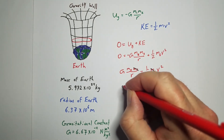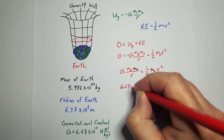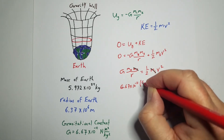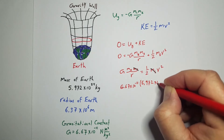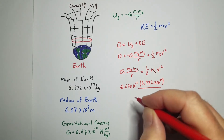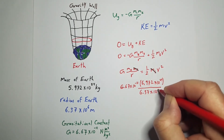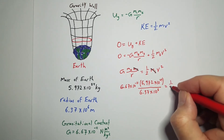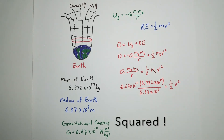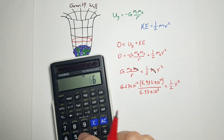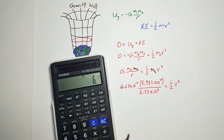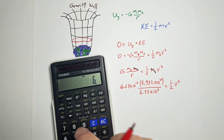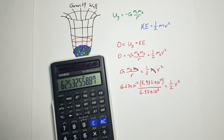Now let's go ahead and start putting in some numbers. G is 6.67 times 10 to the minus 11. The mass of the Earth is 5.972 times 10 to the 24th, divided by the radius of the Earth which is 6.37 times 10 to the 6th. That is going to equal one-half the velocity squared we need to escape Earth's gravity. Let's go to my trusty calculator: 6.67 times 10 to the negative 11, times 5.972 times 10 to the 24th, divided by 6.37 times 10 to the 6th. That gives us a big number, and then we multiply by 2.